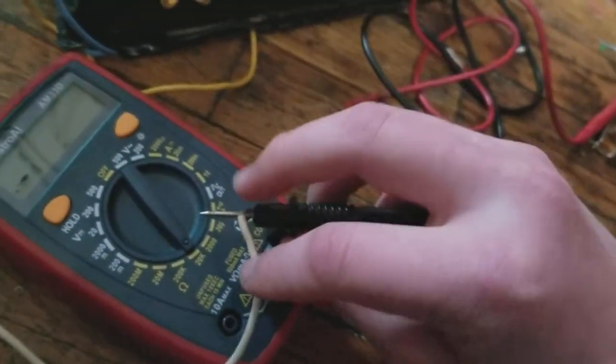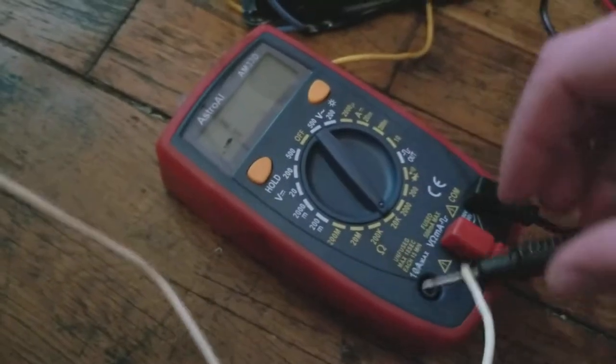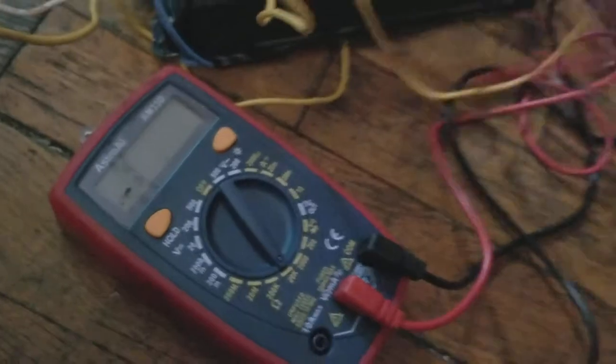What I'm going to do is test it. I'm going to hook up this white wire, which is one of the leads that actually plugs into the power, to one piece of my meter. Then I'm going to start testing all the wires besides the black wire.